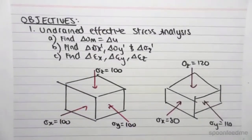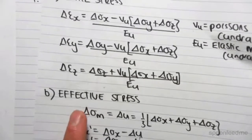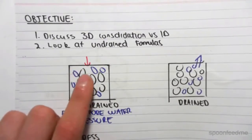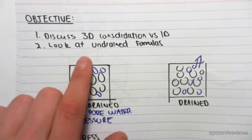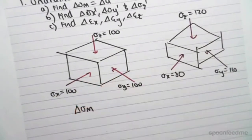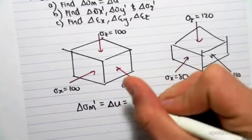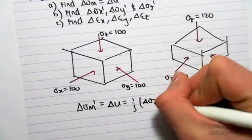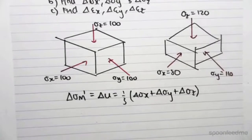When we have an undrained case — we've done total stress and we're doing effective stress now — all the stress is felt by the pore water pressure. We get excess pore water pressure because all the applied stress is felt by the water. So we can say that the mean volumetric stress is equal to the change in the pore water pressure, which is simply one third of: change in total stress x, plus change in total stress y, plus change in total stress z.